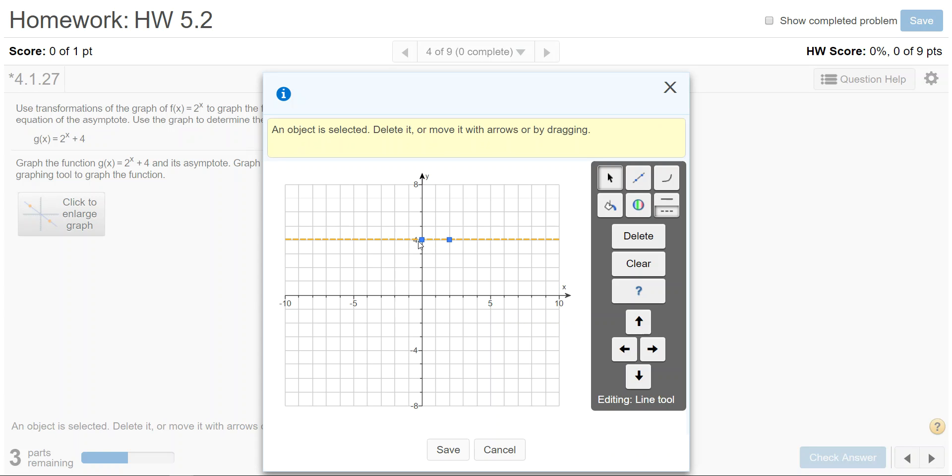Next we want to graph the exponential function which is going to be 1 above the asymptote. So now select the exponential tool and select the solid line and then plot a point 1 above.